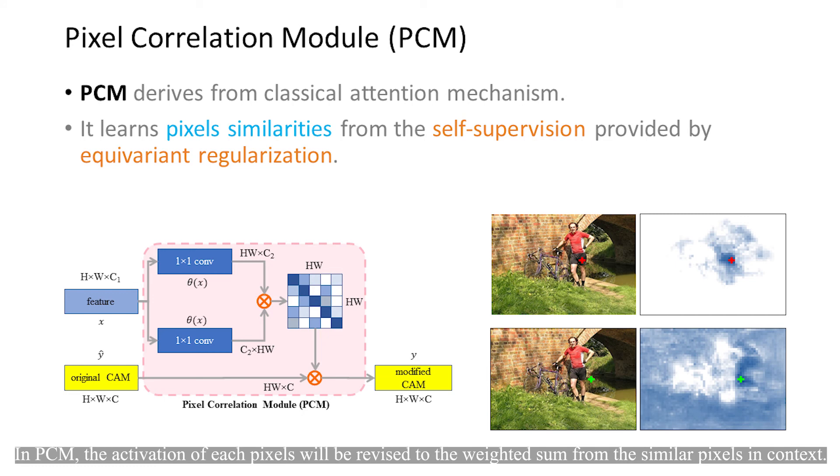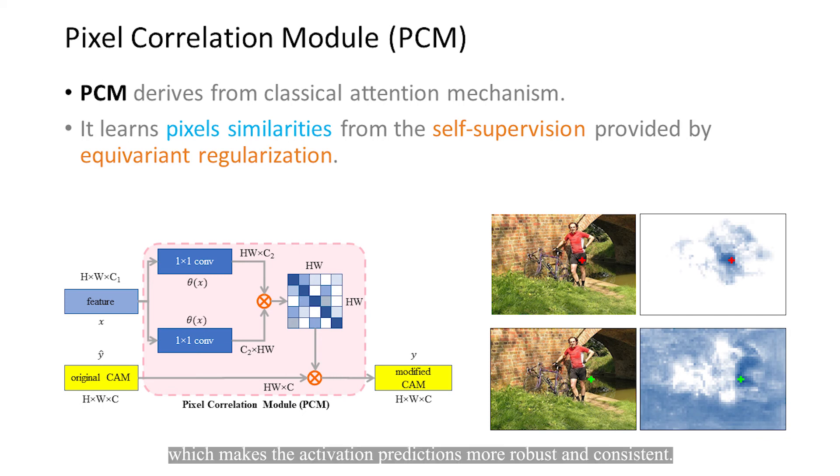In PCM, the activation of each pixel will be revised to the weighted sum from the similar pixels in context, which makes the activation predictions more robust and consistent.